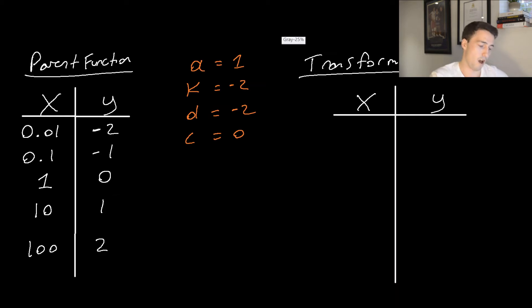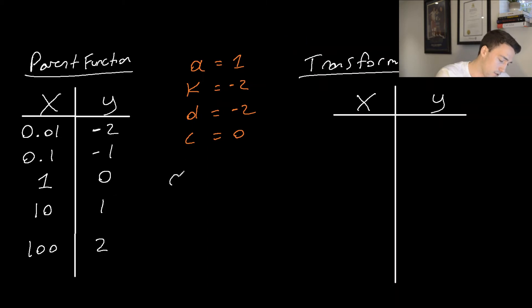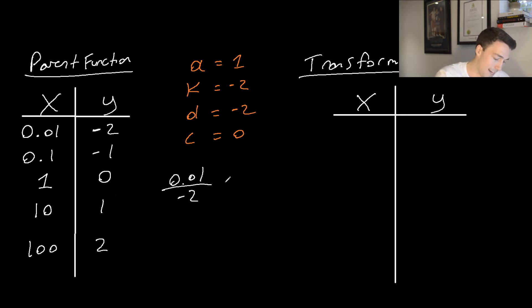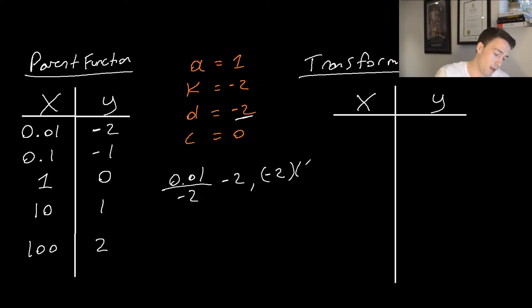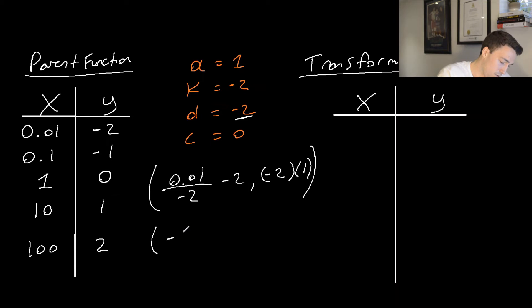We can use the same parent points as before and apply the mapping rule with our new a, k, d, and c values. For the first point (0.01, −2): x becomes 0.01 divided by −2, minus (−2), giving −0.005 − 2 = −2.005. The y coordinate is 1 × (−2) + 0 = −2. So the first transformed point is (−2.005, −2).